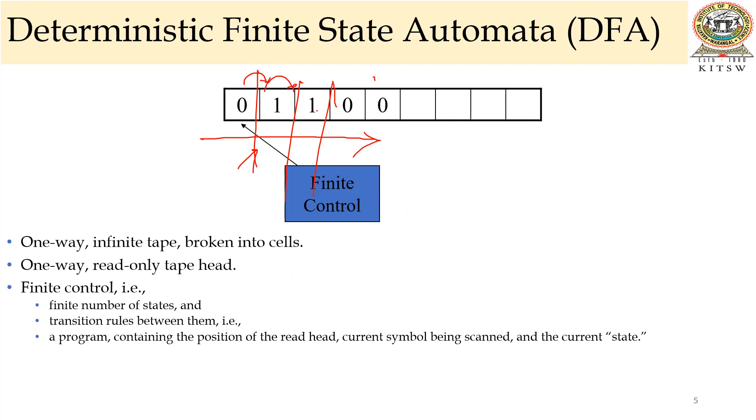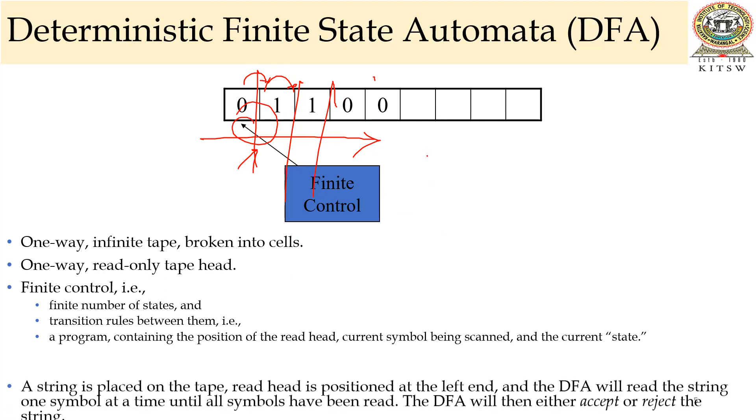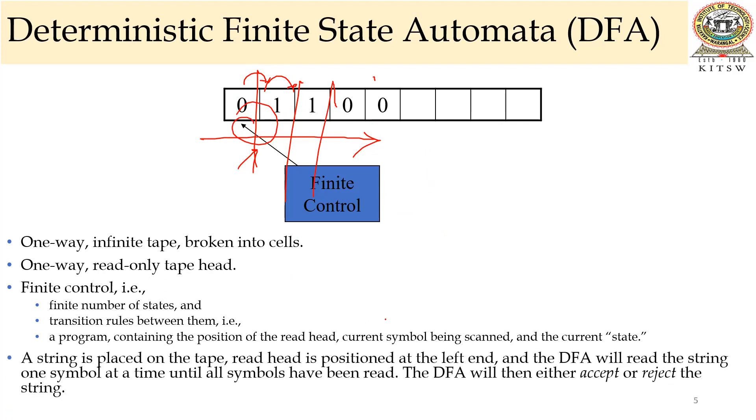A program contains the position of the read head. For this read head, it will be having a program and the current symbol being scanned, and that is the current state. The string is placed on the tape, and the read head is positioned at the left end. The DFA will read the string one symbol at a time until all symbols have been read. Complete the string, it will read. And the DFA will then either accept or reject the string. Output is either accept or reject. There are only two things it is going to give you.